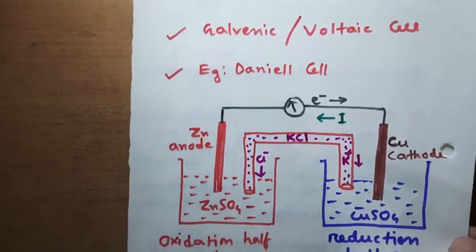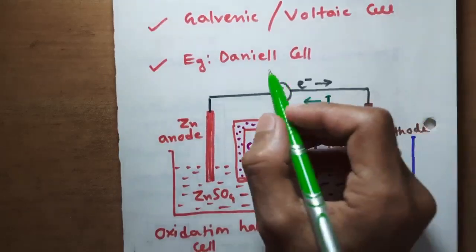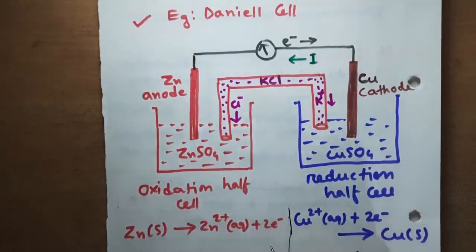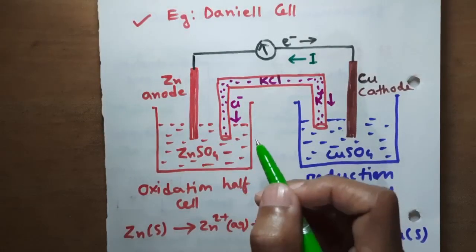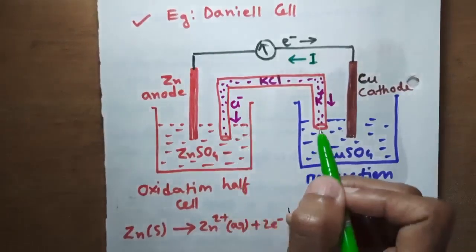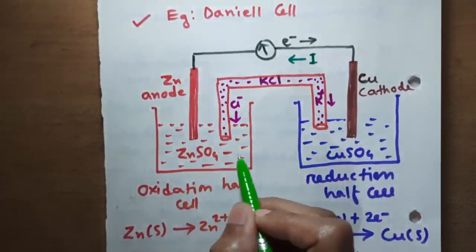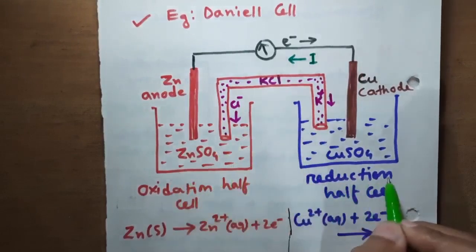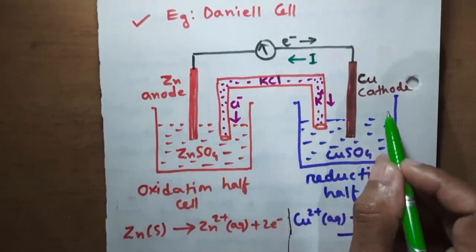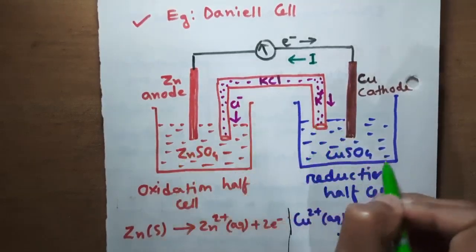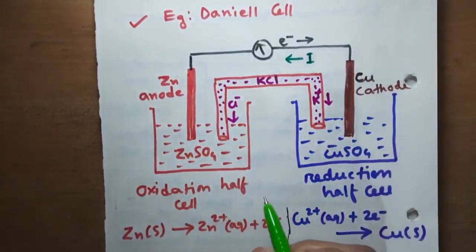Now we will move on to the Daniel cell. Generally, when we represent an electrochemical cell, we draw the oxidation half cell on the left-hand side and the reduction half cell on the right-hand side. Here, this is the oxidation half cell and this is the reduction half cell.